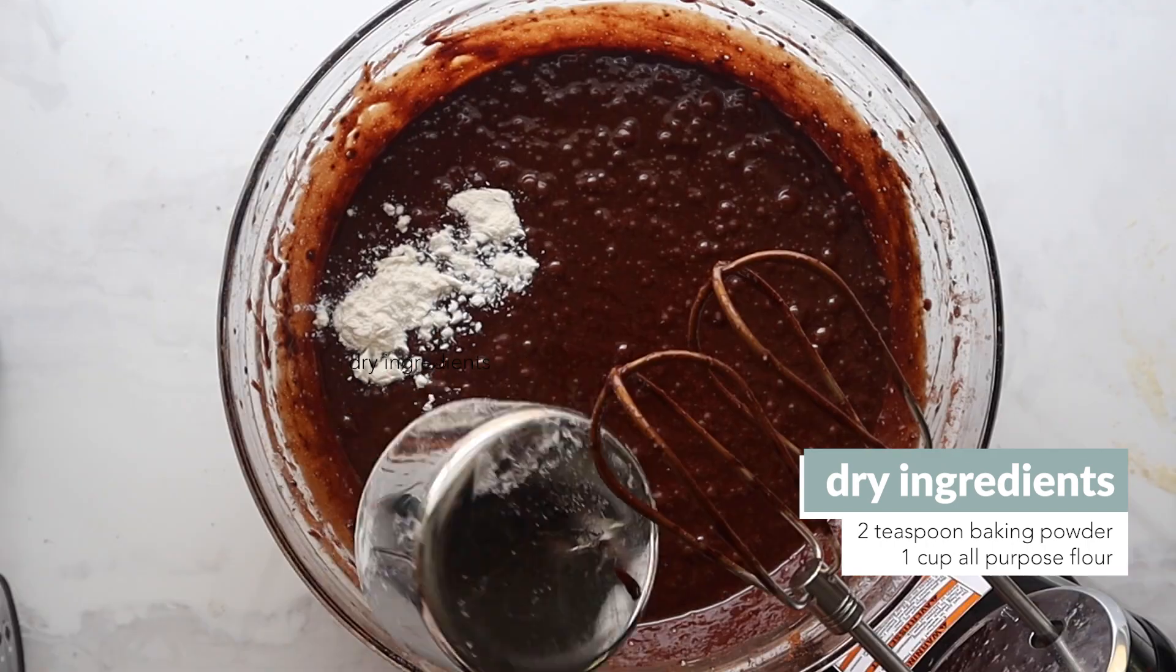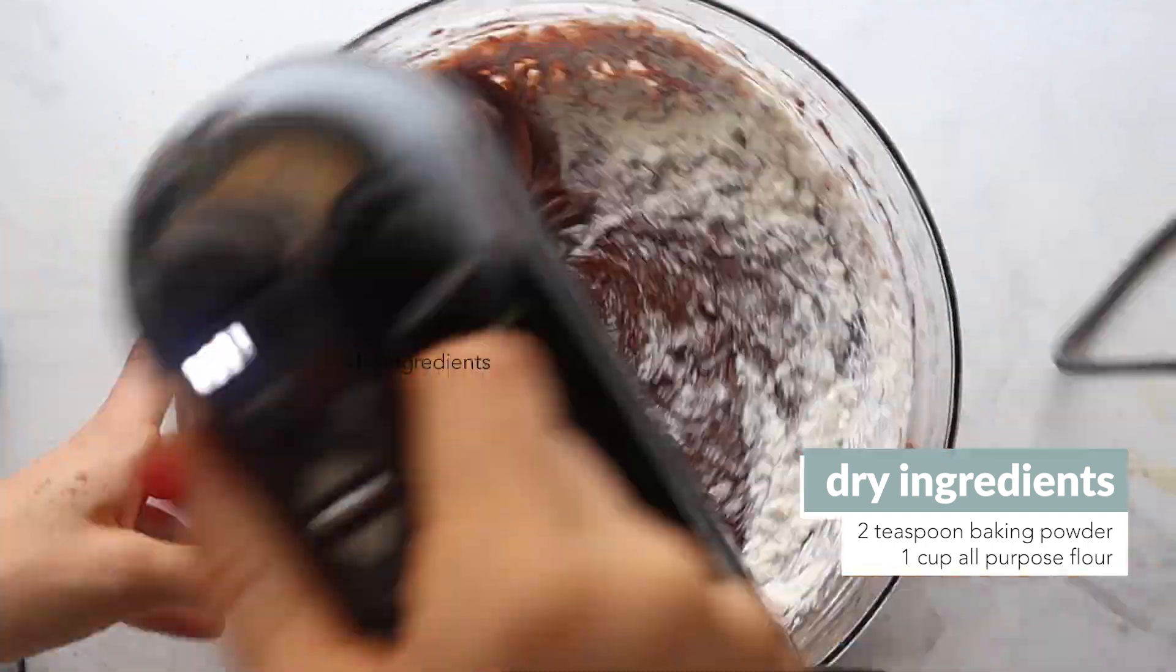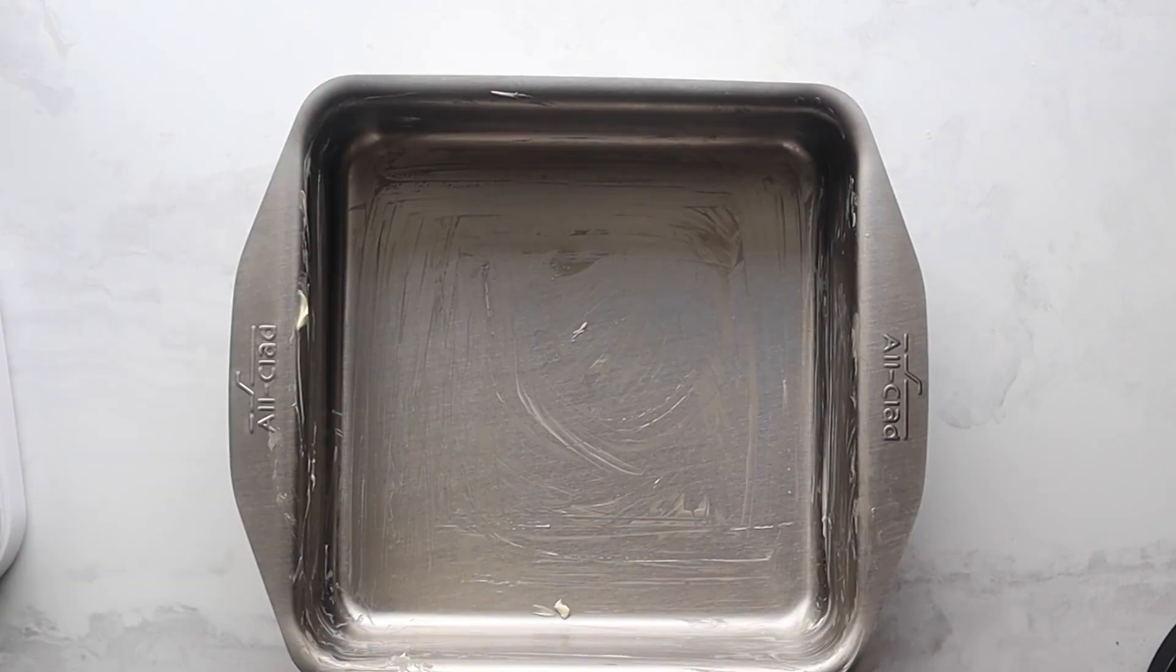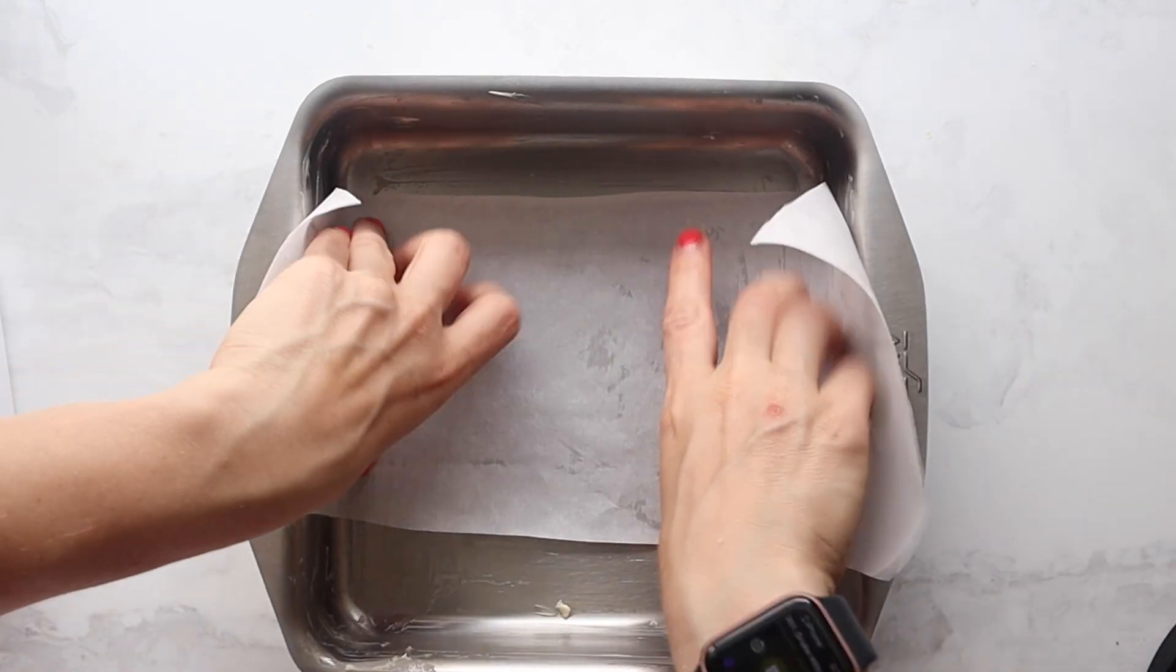Last, add in some baking powder and all-purpose flour, and then give it a good mix until everything is incorporated and pour it into a pan. This is for a nine by nine pan, but we're going to show you how to convert it to any other recipe too.